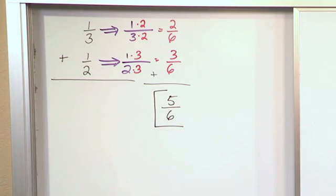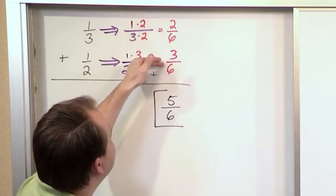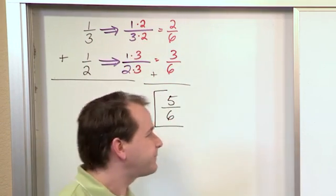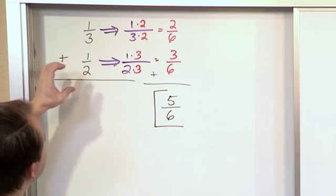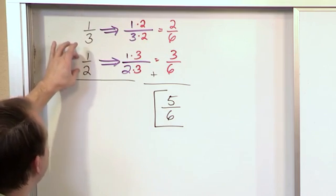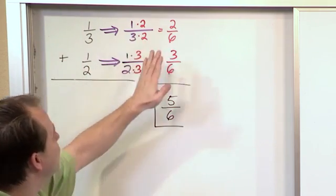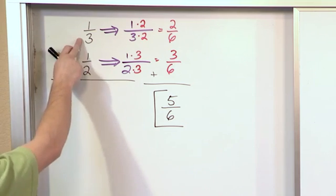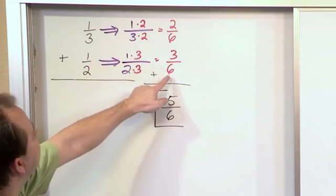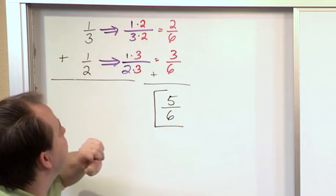So notice what we had to do here, different from the previous problems. We still were trying to get to the point where the denominators were the same. That's all we're trying to do with fractions when we add them. But in the previous problems, we only had to manipulate one fraction to get here. Now we had to manipulate two fractions to get there. The way that we pick what to do is because we're looking at these two bottom numbers and we're saying, what can I multiply two times to give me a denominator that will also allow me to multiply this by something to get the same thing.